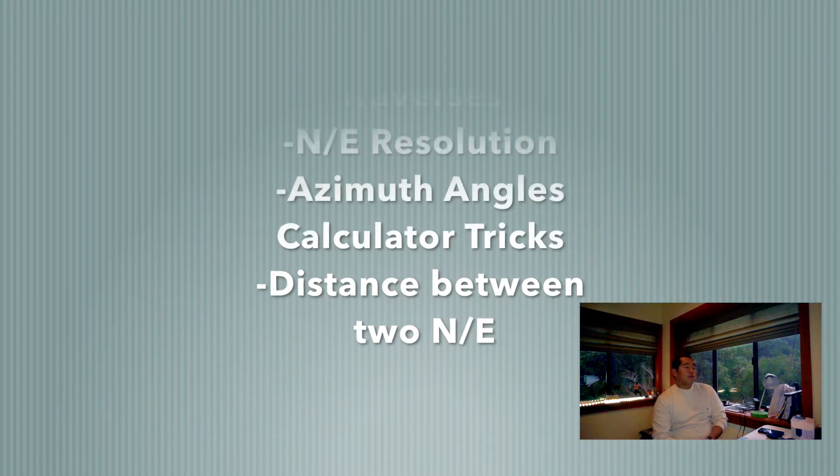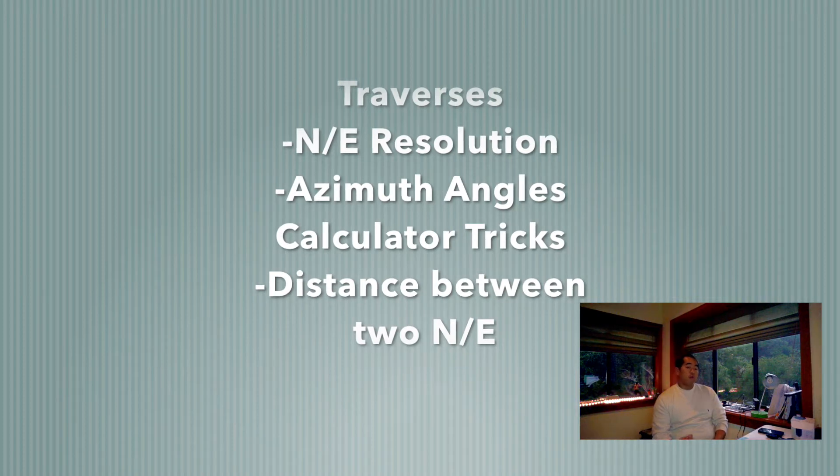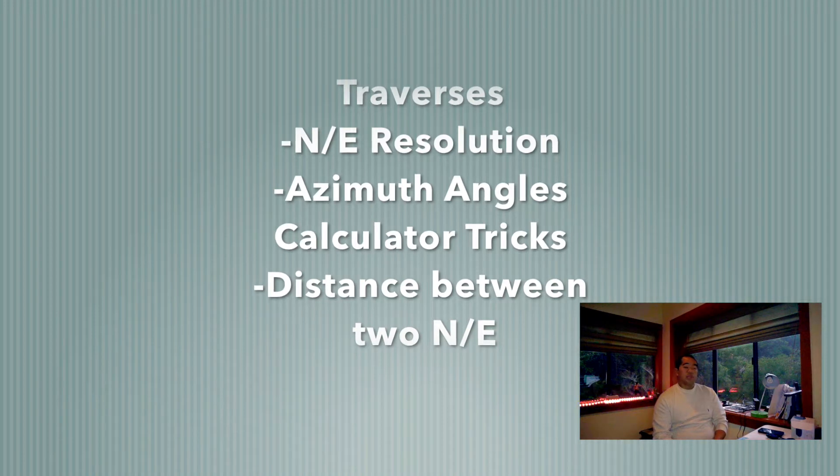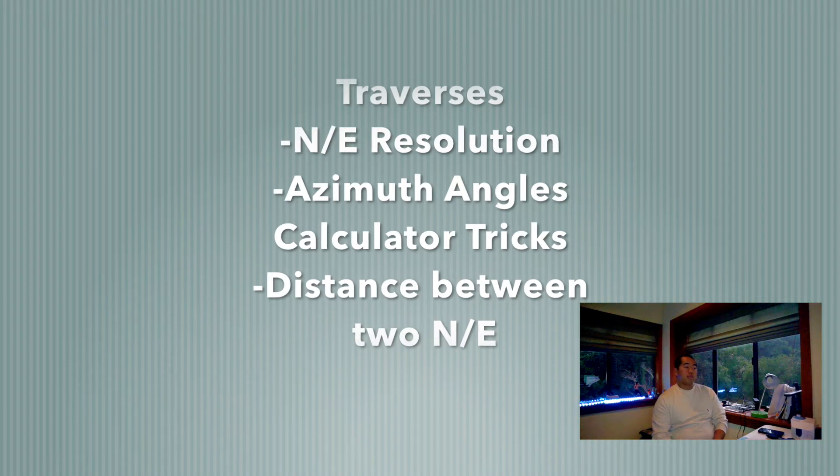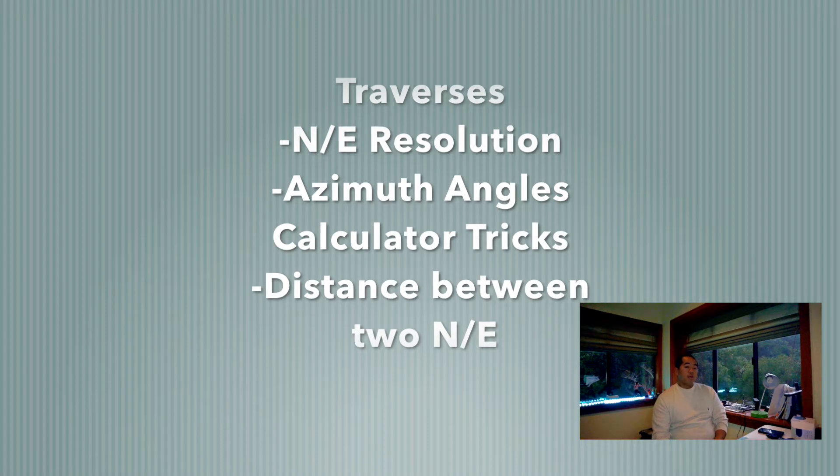There's four different topics that we're going to get into today: northing easting resolution and how we go from point A to point B, azimuth angles and how you can use the calculator to save some quick time, and then the distance between two northing and easting points. We can basically get this from just knowing the x and y coordinates, or really the northing and easting coordinates.